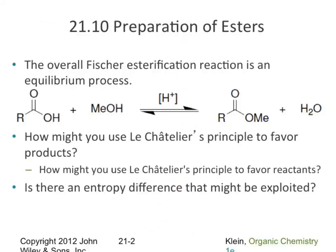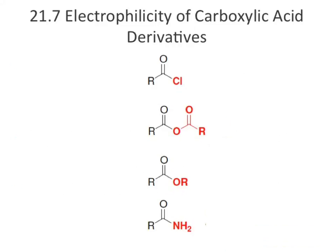Esters, carboxylic acids, and amides all have very similar equilibrium-dependent chemistry. In contrast, anhydrides and acyl chlorides are very unidirectional — the electrophile is so reactive that pretty much any nucleophile pushes the reaction completely to products. With esters and amides, though, the chemistry is very equilibrium dependent.